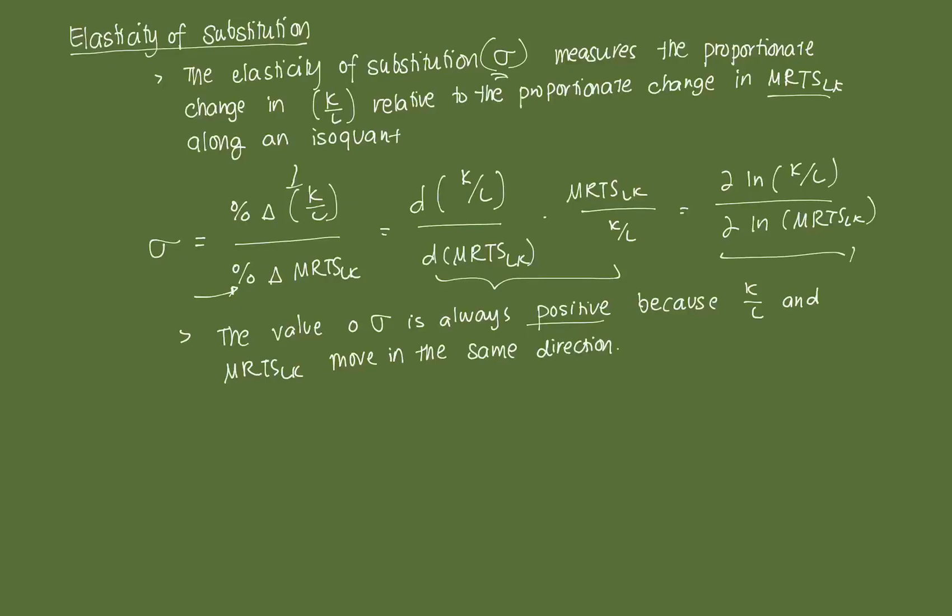Now, one thing to note is the value of sigma is always positive because the capital-labor ratio and the marginal rate of technical substitution, they move in the same direction. So we'll do this graphically now.